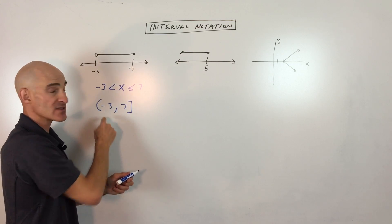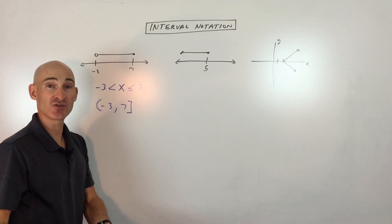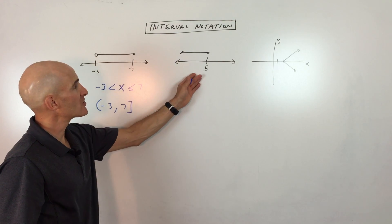You just have to think about whether it's open, which is a parenthesis not including that point, or a square bracket, closed, which does include that point. Let's look at another example.